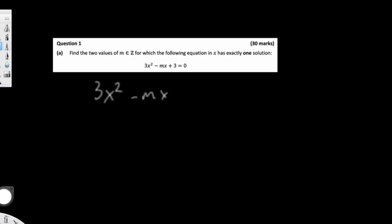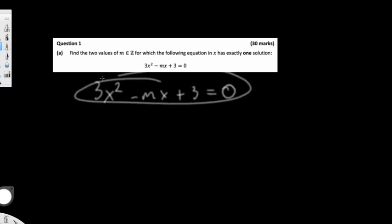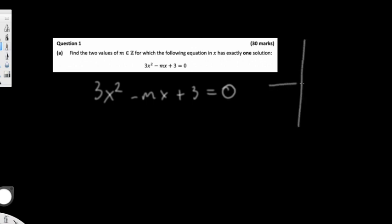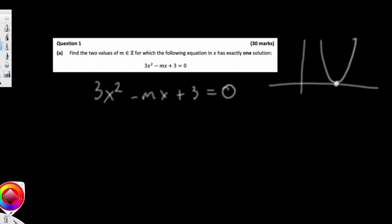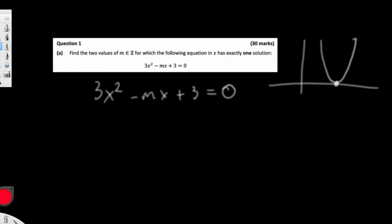Here's question 1, which is an algebra question. We have this quadratic equation. I have a habit of rewriting the question just after I start, and we want to find a value for m here, which we don't know, so that the quadratic equation has exactly one solution. So what they're talking about is some quadratic equation which will be like a U shape, which will dip down and touch the axis in just one position.